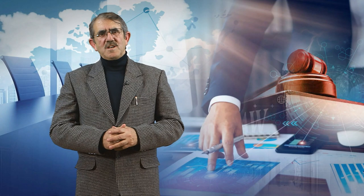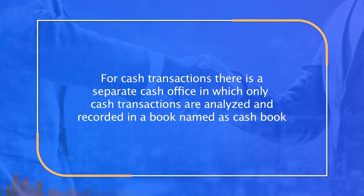The journal is subdivided based on the complexity of transactions or size of the business. This happens when there are a large number of cash transactions in a day and also many transactions for credit purchases and credit sales. This large number of transactions creates a mess in the bookkeeping office. Therefore, separate bookkeeping clerks are given responsibilities for separate types of transactions along with separate journals. For cash transactions, there is a separate cash office in which only cash transactions are analyzed and recorded in a book named as cash book.